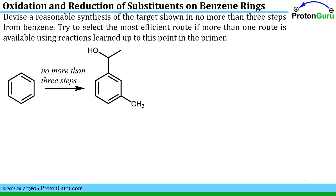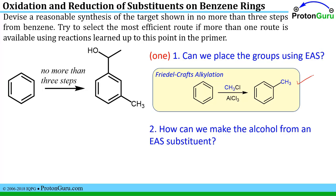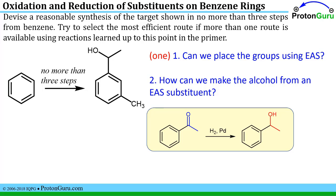Here's another case: we're trying to make a meta-substituted benzene ring with a methyl group on one site and an alcohol-bearing substituent on the other. We can put the methyl group on with Friedel-Crafts alkylation, but we don't know how to directly put on a group with an alcohol functional group using standard EAS reactions. One approach: if we have a ketone in the benzylic position, we can easily reduce that using hydrogen and palladium to get the target alcohol substituent. And we know how to put that ketone on using the Friedel-Crafts acylation reaction.